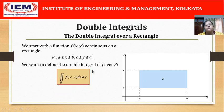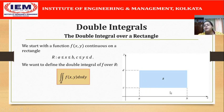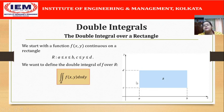How do we do that? Let us recapitulate for a moment what we did for single variable integration: ∫[a to b] f(x) dx. There, we had subdivided the interval [a, b] into small subintervals. Here also, we proceed in the same way. The only difference is now we do it for the interval [a, b] as well as for the interval [c, d] in the y direction.